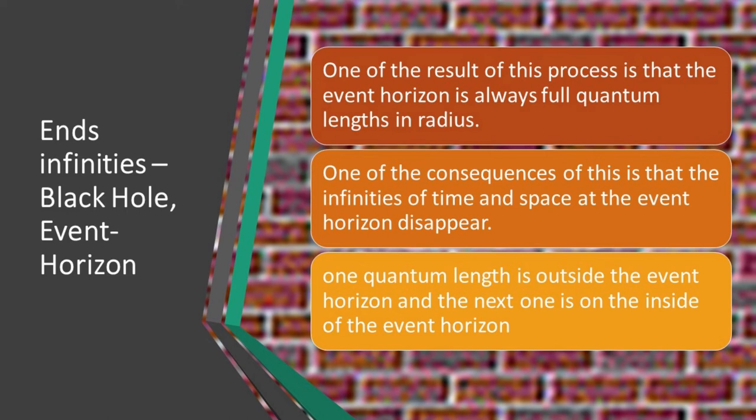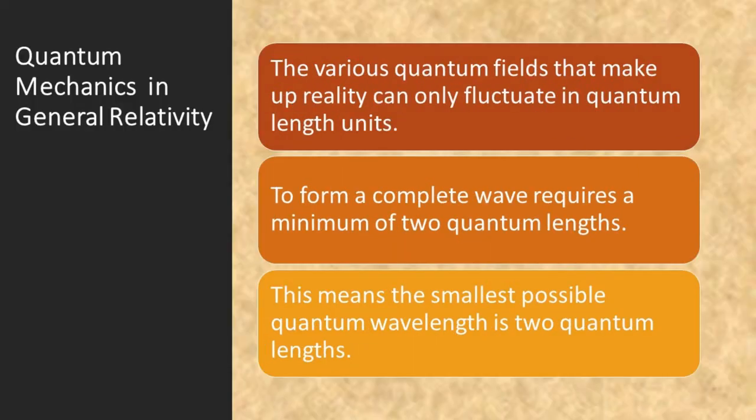One of the results of this process is that the event horizon is always full quantum lengths in radius. One of the consequences of this is that the infinities of time and space at the event horizon disappear. One quantum length is outside the event horizon. The next one is inside the event horizon. The various quantum fields that make up reality can only fluctuate in quantum length units.